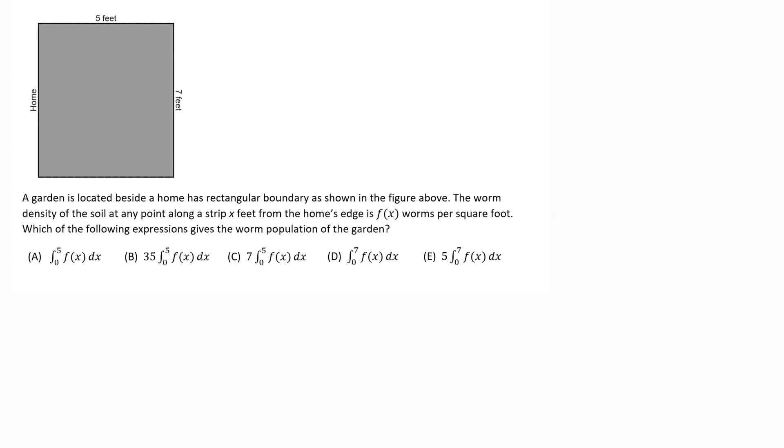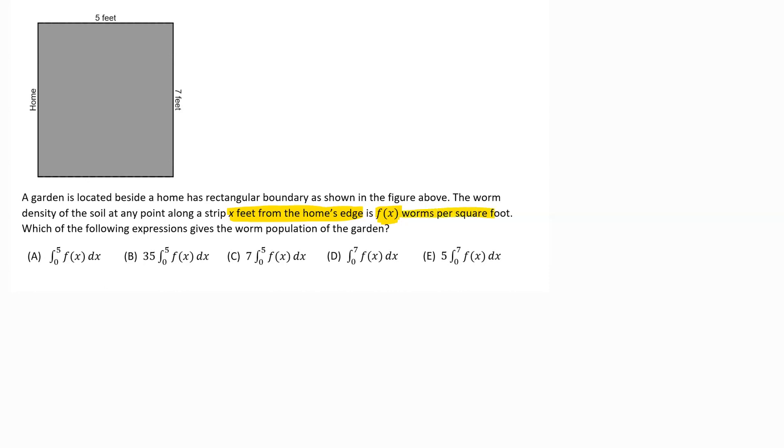The worm density of the soil at any point along a strip x feet from the edge of the house is provided by f of x, where it's in worms per square foot. They want to know which of the following integral expressions gives the worm population of the garden.